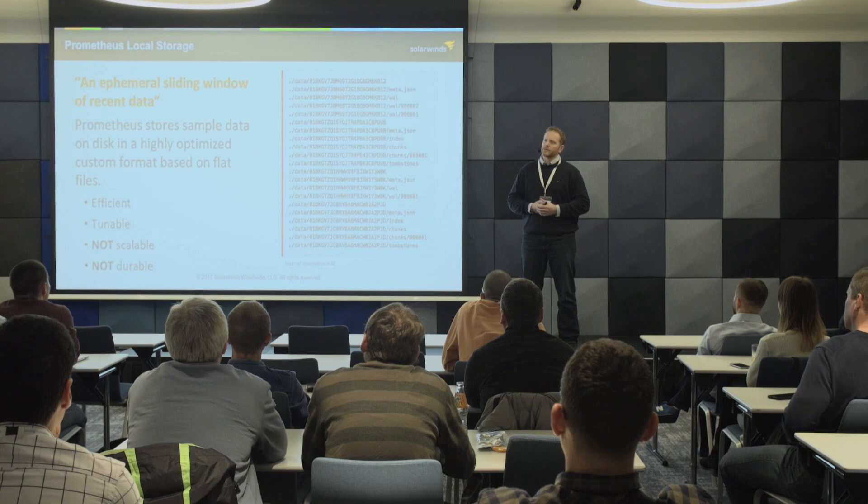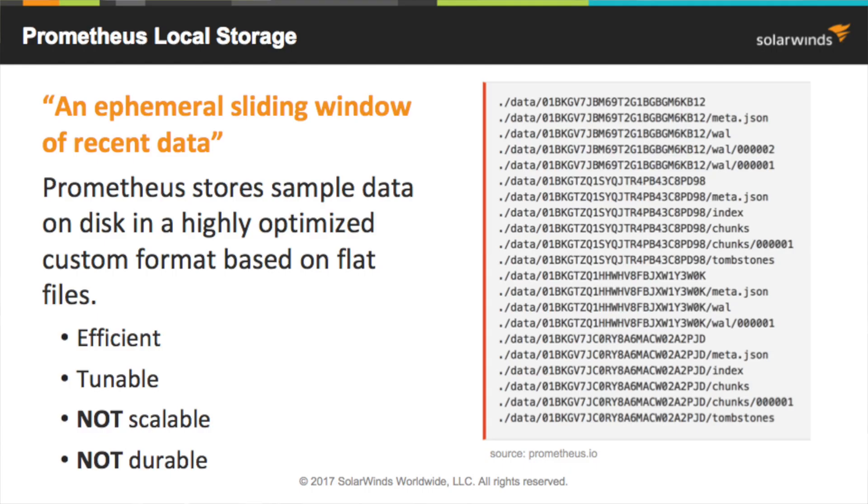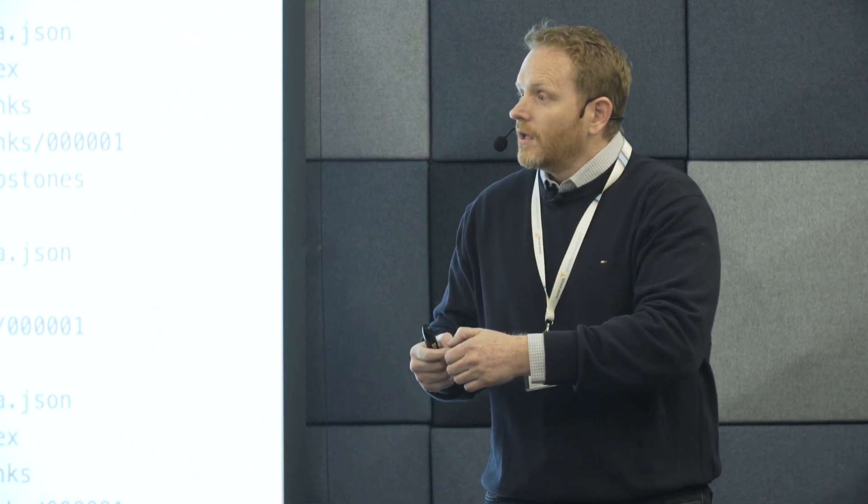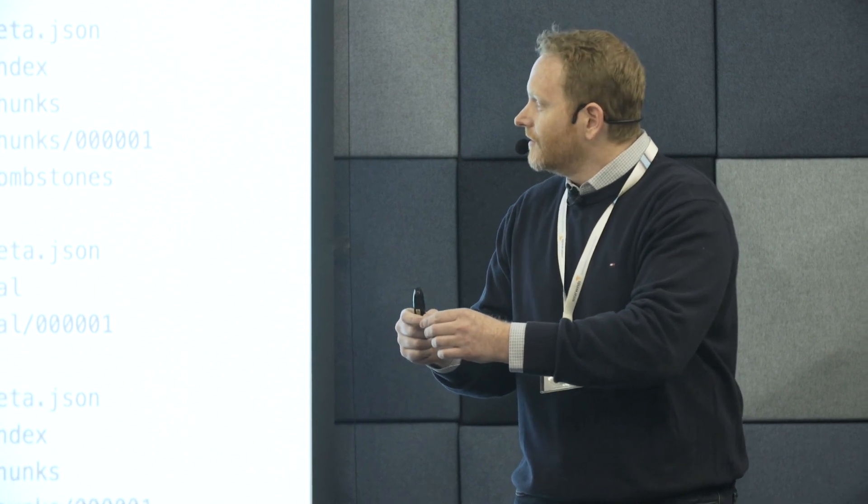Prometheus has some shortcomings around storage. The binary goes out and scrapes all of your endpoints, pulls back those metrics — that's really all it wants to deal with — stores them, compresses them, and does it really efficiently. They've just done a 2.0 release. But they store it locally, and part of the issue is they really don't have a high availability system. It's not like you deploy two of these to make sure they're constantly monitoring the same endpoint. You can do that, but they don't talk to each other; they're not aware of each other. It isn't an HA system. So they store their metrics locally — if your local disk goes down, you lose those metrics.